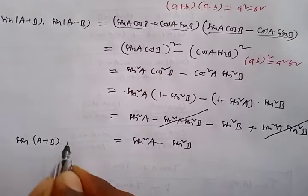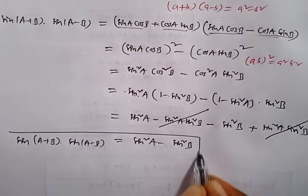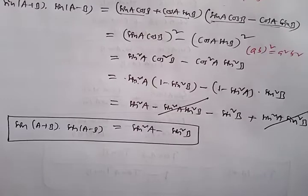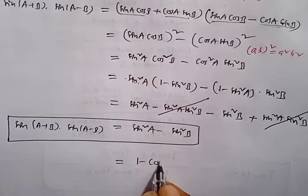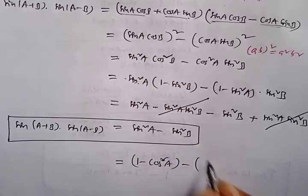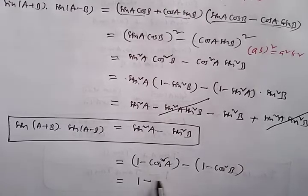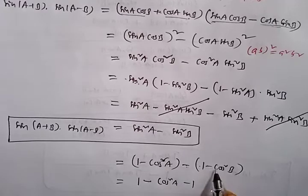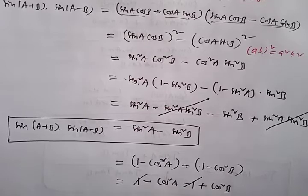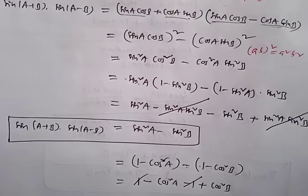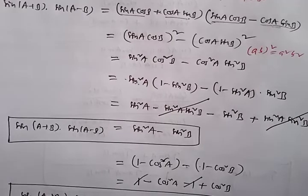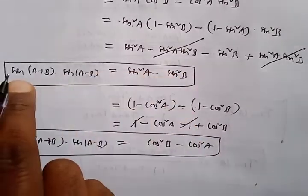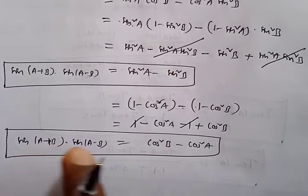If you want the formula in terms of cos instead, convert sin²A to (1 - cos²A) and sin²B to (1 - cos²B). After simplifying, the ±1 terms cancel and we get cos²B - cos²A. So sin(A+B)·sin(A-B) = sin²A - sin²B, or equivalently cos²B - cos²A.